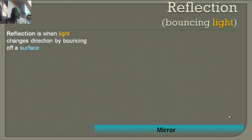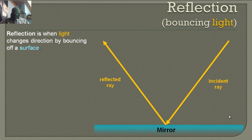First, in terms of reflection: reflection is when light changes direction by bouncing off a surface. Here our surface is a mirror, and the light ray is going to bounce.